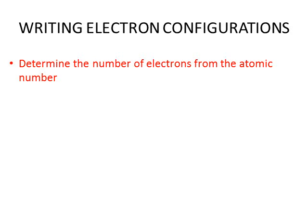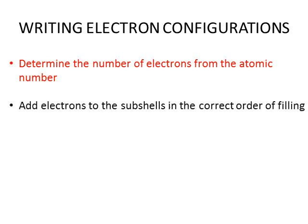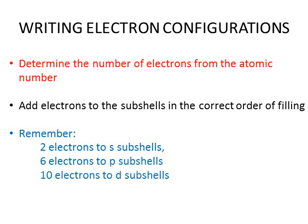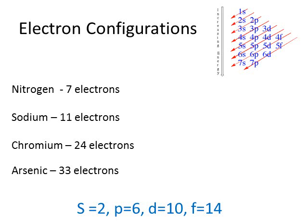So, when we're writing electronic configurations, there are three basic steps. First, we need to work out how many electrons there are. You can do this by looking up the atomic number on the periodic table. Then, we start adding electrons to the subshells, remembering the filling order. And we also need to remember the maximum number of electrons that each subshell can hold. 2 in the s subshell, 6 in the p subshell, 10 in the d, and 14 in the f subshell.